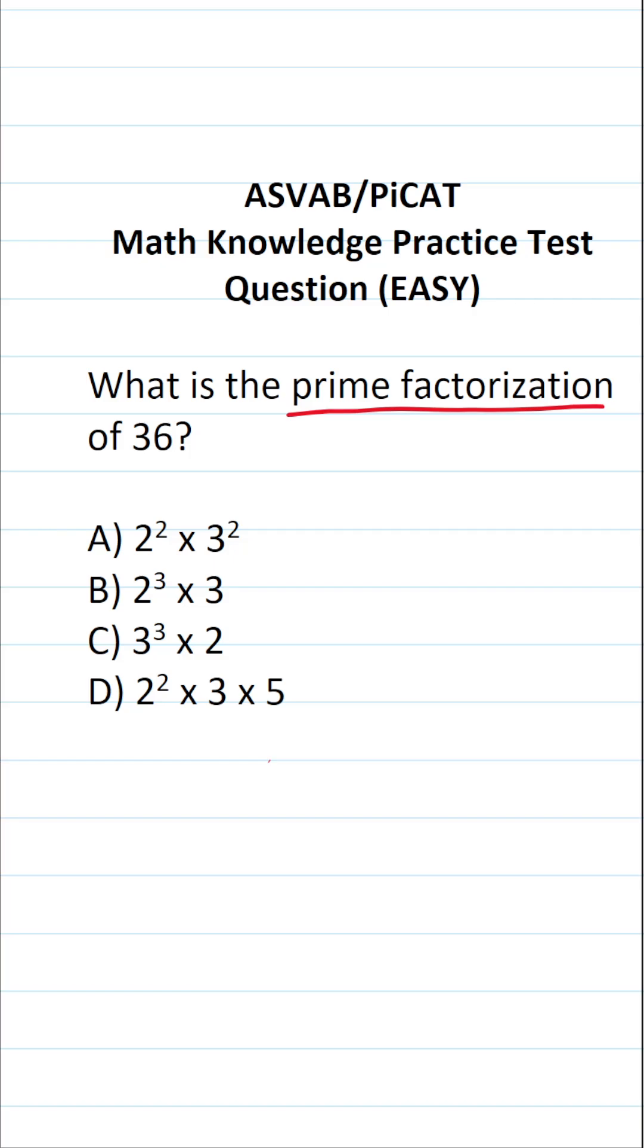So to find the prime factorization of any number, you're going to start with that number and you're going to break it down using prime numbers in what's called a factor tree.